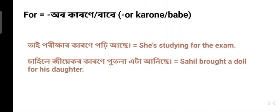Next example: Sahil brought a doll for his daughter. 'Ziak' means his daughter, 'ziak karane' means for his daughter, 'putola' means doll, 'eta' means a/the, and 'anise' means brought. You can also say 'Sahil yi ziakár babe putola eta anise' or 'Sahil yi ziakáloi putola eta anise'.